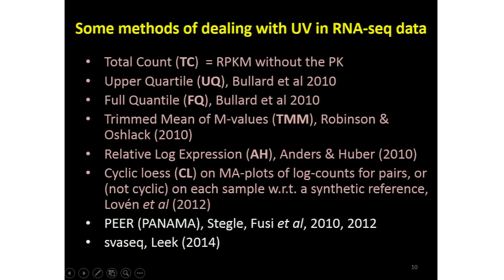The ones in light brown colour are all global. The bottom ones — PEER, Panama, and also SVA-seq — are application-specific. They have their normalisation within the model for doing whatever they're going to do, and they are typically either differential expression, classification, or something, but they're different from the global ones. There's not too many application-specific ones for RNA-seq, and ours is — though I haven't got ours on the list.